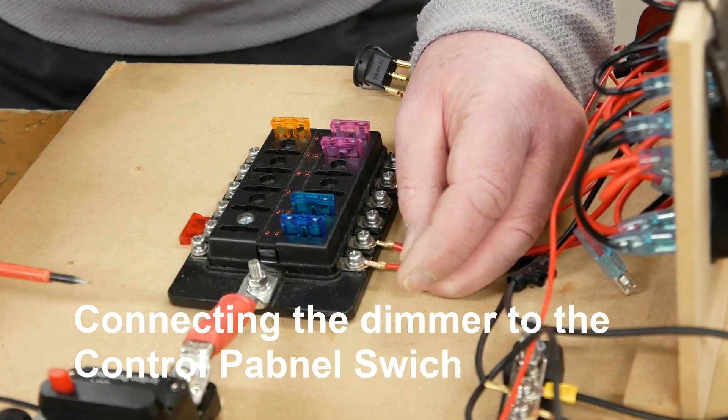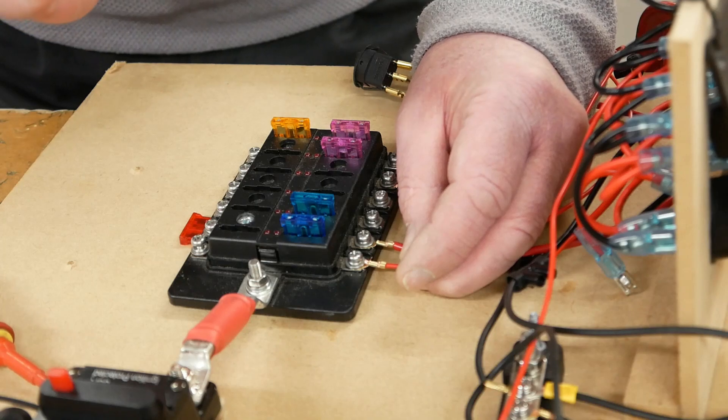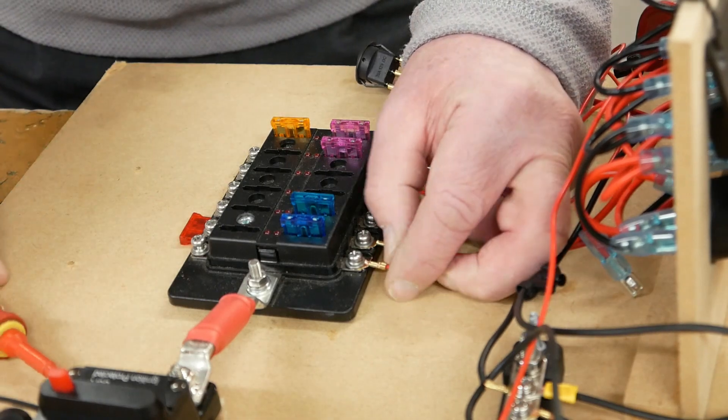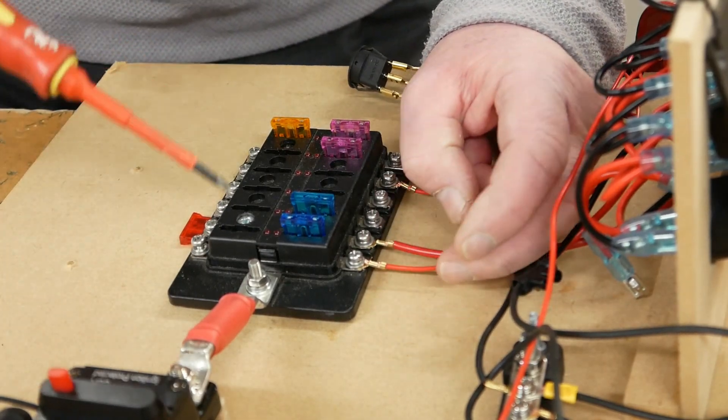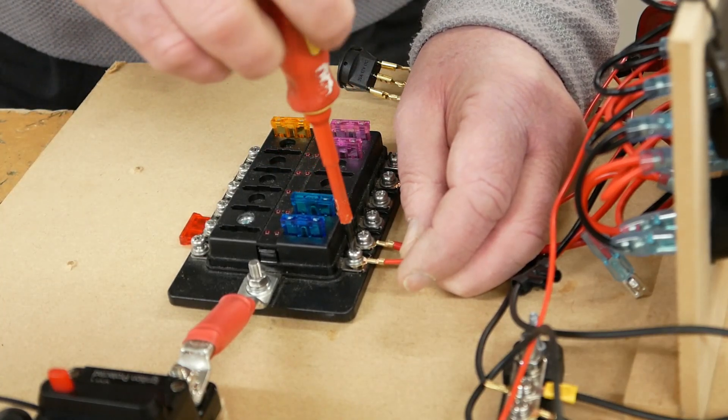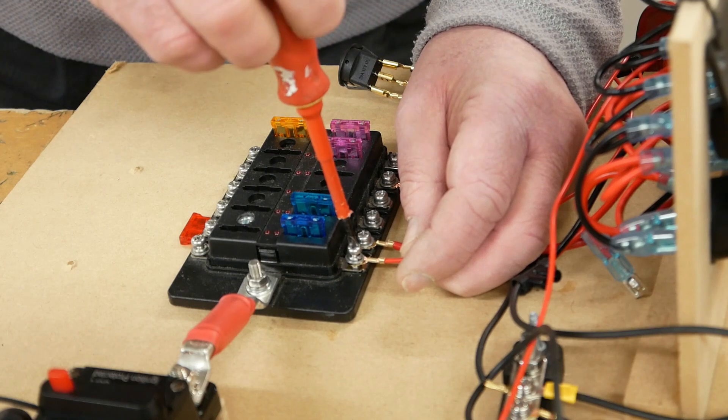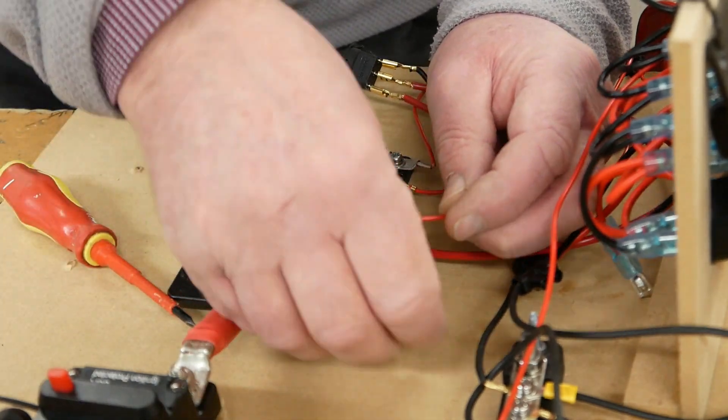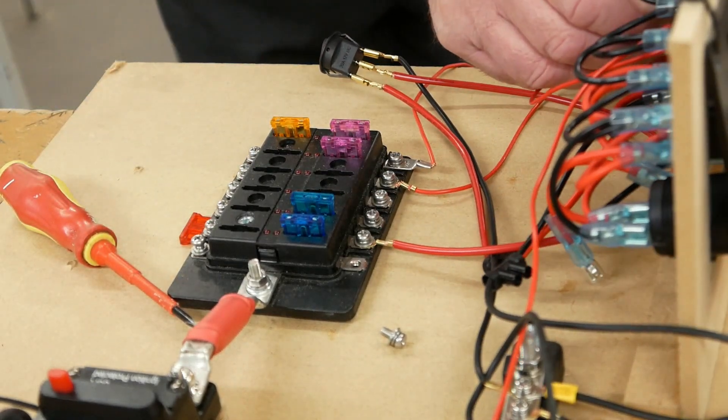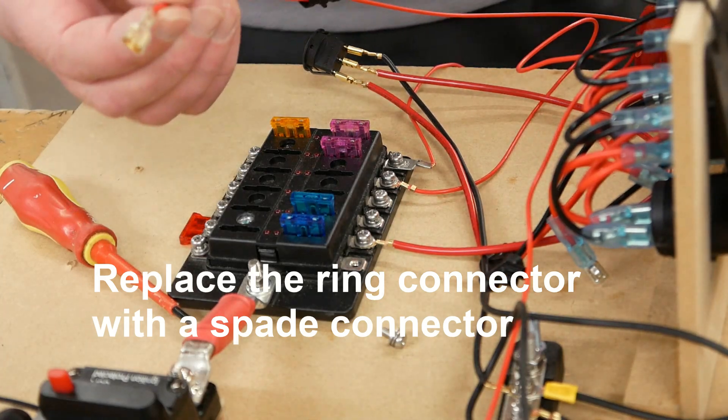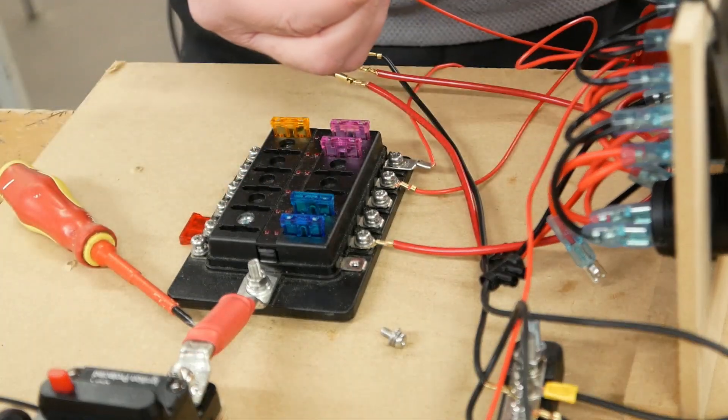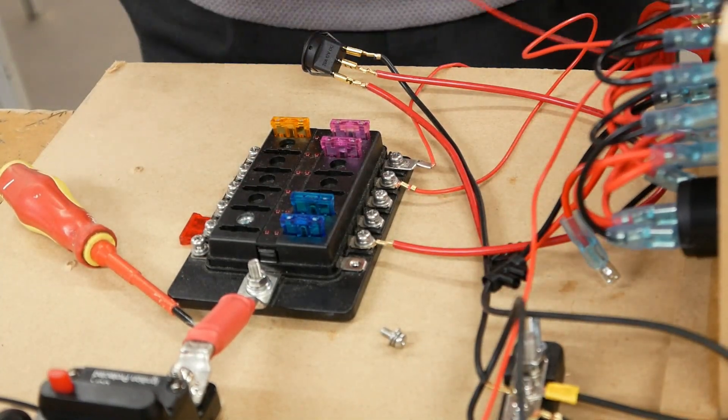So to make the dimmer switch a two-way switch so you can have the dimmer switch functioning in the bedroom area and then the control panel over by the door, all you have to do is disconnect the red cable from the fuse box. Cut that ring connection off, pop on a spade connector, and then I'll show you.